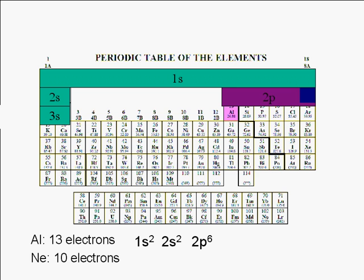The next subshell is the 3s subshell. We assign the next two electrons to this subshell. So far, we have assigned 12 electrons. We have one more to assign to get the electron configuration of aluminum. The 13th electron goes into the next subshell, the 3p subshell.